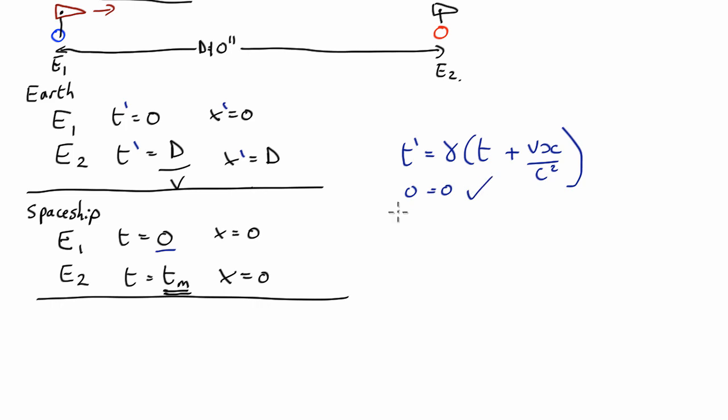The crucial bit is Event 2. So Event 2, we know that t' = d/v, and that's going to be γ(t_Mars + vx/c²). But this x is not x', it's x as measured by the spaceship, so that's going to be 0. So that's v × 0 over c².